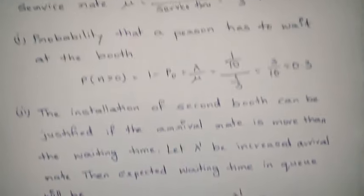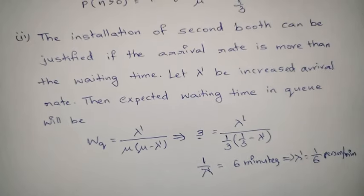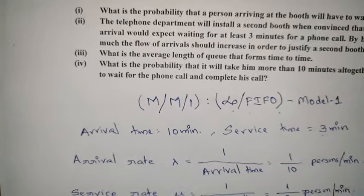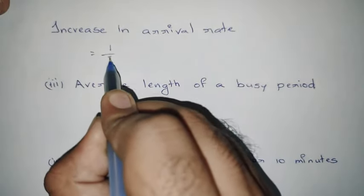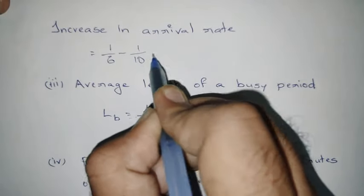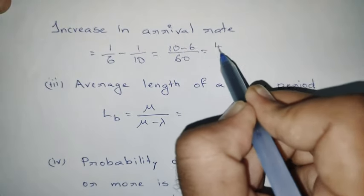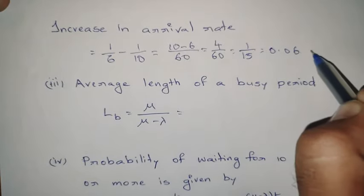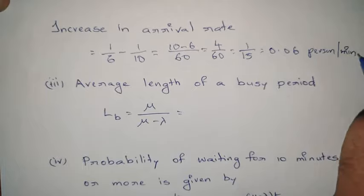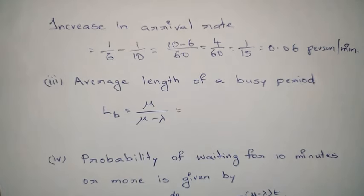The old arrival rate was 1/10 and the new required arrival rate is 1/6. The increase in arrival rate is 1/6 − 1/10 = (10 − 6)/60 = 4/60 = 1/15 ≈ 0.06 persons per minute. So the arrival rate must increase by 1/15 persons per minute to justify installing a second booth.